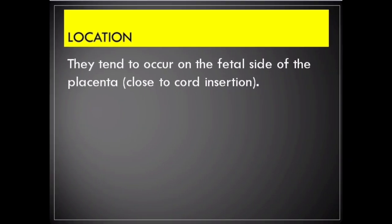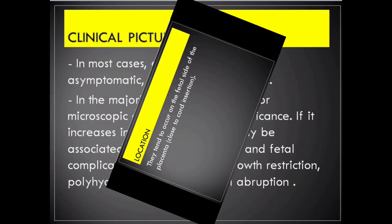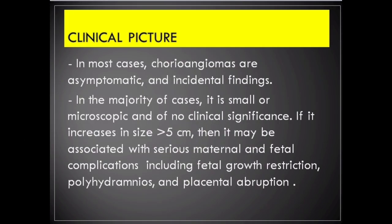Chorioangiomas tend to occur on the fetal side of the placenta, close to cord insertion. In most cases, chorioangiomas are asymptomatic and incidental findings. In the majority of cases, they are small or microscopic and of no clinical significance.